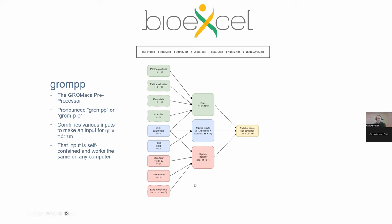This TPR file is structured so that it can be read the same on any computer on the planet. A whole bunch of software engineering behind the scenes makes that true, so your laptop will read and write the same file as any big simulation engine — your local supercomputer, the biggest sites in the world — all working exactly the same. Other inputs are also needed: MDP parameters for things like constraints and temperature coupling, supplied with the minus-f command line flag to GROMPP.